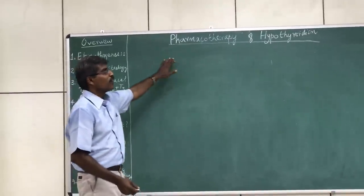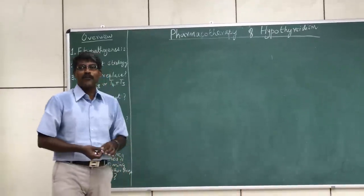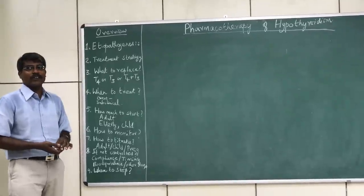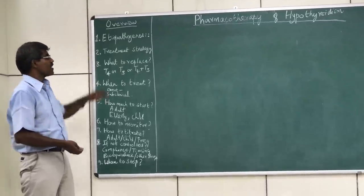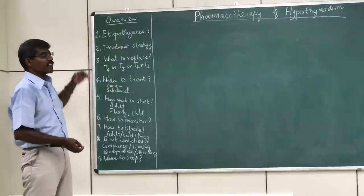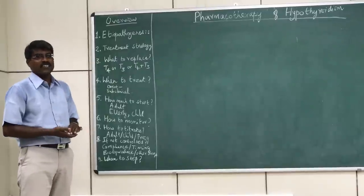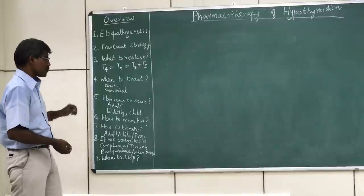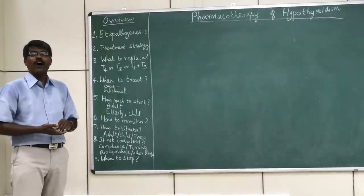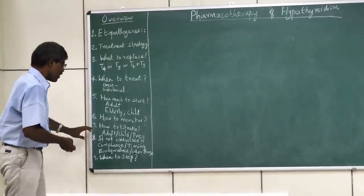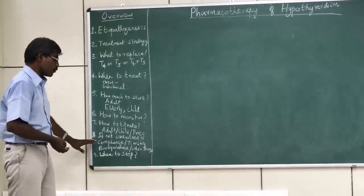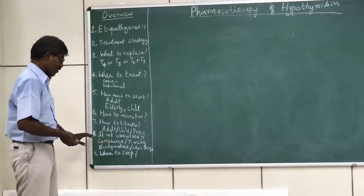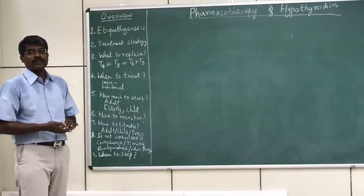This session we will see about pharmacotherapy of hypothyroidism. To give an overview of what we are going to cover: we will see about the etiology, pathogenesis, and treatment strategy — what to replace, when to treat, how much to start, how to monitor, how to titrate therapy, what to do if targets are not achieved, and when to stop.